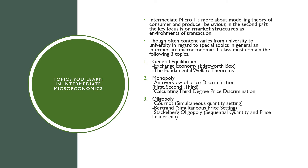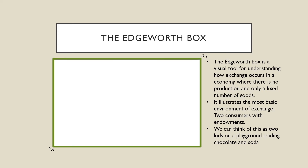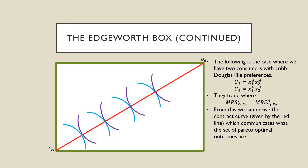And Oligopoly, where we talk about Cournot, Bertrand, and Stackelberg Oligopoly — Stackelberg meaning sequential quantity and price leadership type of oligopoly. So let's talk about the Edgeworth Box. The Edgeworth Box is a visual tool for understanding how exchange occurs in an economy when there is no production and only a fixed number of goods. It illustrates the most basic environment of exchange with only two consumers with endowments — we can think of this as two kids trading chocolate and soda. What's illustrated here is the case where we have two consumers with Cobb-Douglas-like preferences, which are symmetric. They trade where the marginal rate of substitution of A is equal to the marginal rate of substitution of B. From this, we derive our contract curve, which is given by this red line here, which communicates the set of Pareto-optimal outcomes.